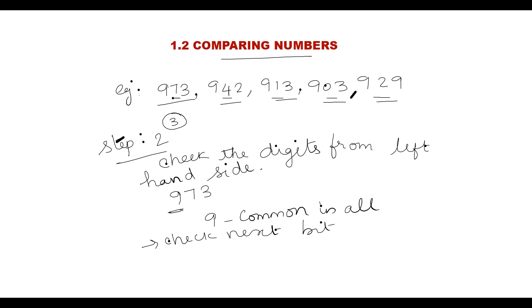Check the next digit from left hand side. From this, we can identify 7 is greater than 4, 4 is greater than 2, 2 is greater than 1, and 1 is greater than 0. So from this, 973 is the greatest number and 903 is the smallest number.